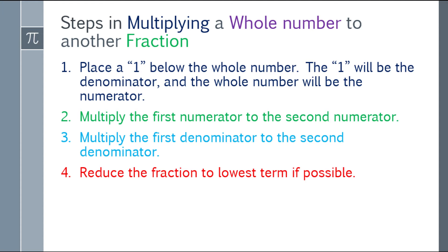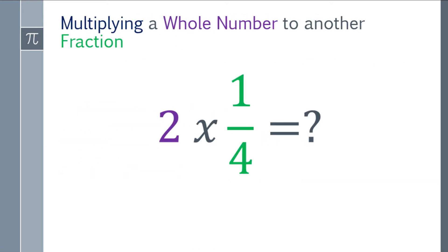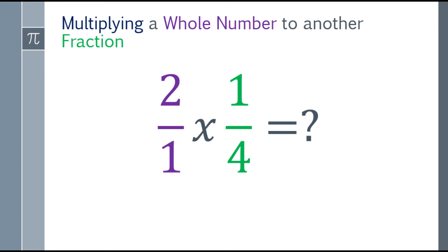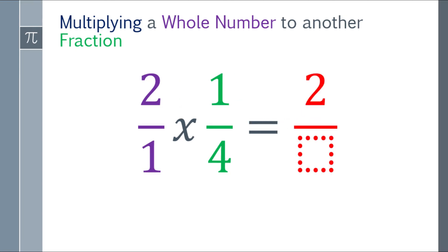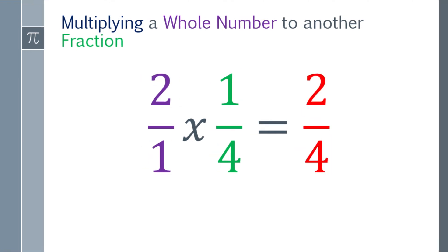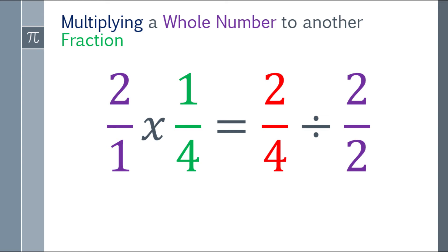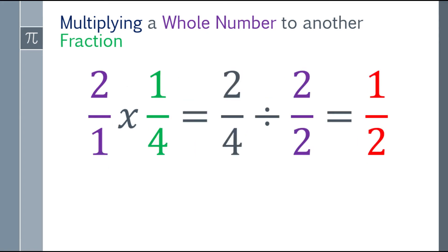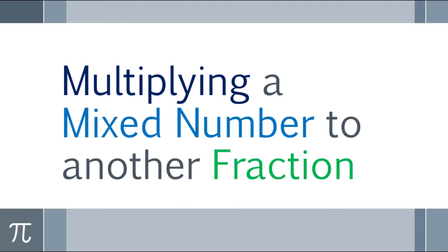Lastly, reduce the fraction to lowest terms if possible. Our problem is two times one fourth. First, we place a one under two, making it two over one. Now we multiply the numerators: two times one is two. Next, the denominators: one times four is four, giving us two fourths. We divide both by the greatest common factor, which is two: two divided by two is one, and four divided by two is two. The final answer is one half.